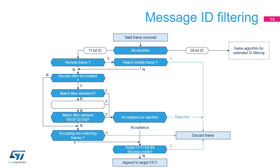The first step in the filtering sequence is accepting or rejecting the remote frames. Then, when the receiver list is disabled, the filter elements are bypassed. Otherwise, the first matching element determines whether the frame is accepted or rejected. When the receiver filter is disabled or no filtering elements have matched, the frame is either accepted or rejected. At last, when the frame is accepted and the targeted RX FIFO is not full, this frame is appended to the RX FIFO.